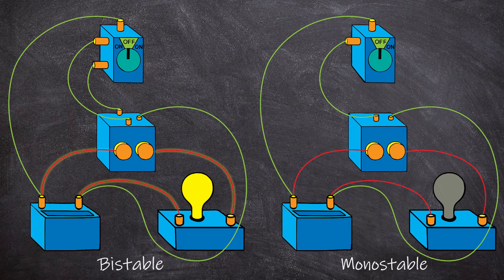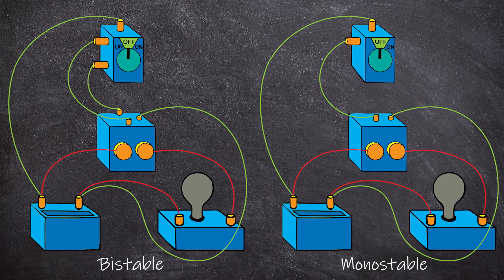The bi-stable relay requires that the control circuit be energized only momentarily. In reality, this impulse is quite brief, typically measured in milliseconds, and is only required to change the bi-stable relay from one stable state to another. In our example, this turns the light on or off, which leads us to a second operational difference: a bi-stable relay requires two-way switching of the control circuit. This is demonstrated when we momentarily energize our third switch contact and turn our light off.